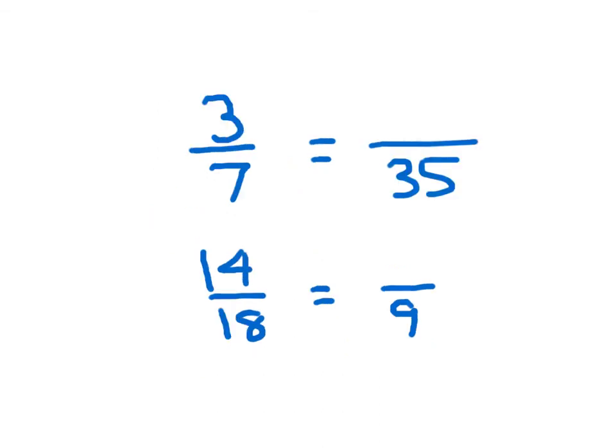Here I have two equivalent fractions where I'm asked to figure out that numerator. How did I get from 7 to 35? Looks like I multiplied by 5. So the same thing must be true in the numerator. 3 times 5 is 15, so 3 sevenths equals 15 thirty-fifths.